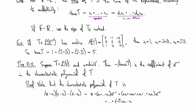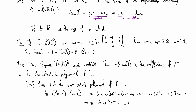So when everything is multiplied out, we have z^n minus trace(T)·z^(n-1) plus lower-order terms, with the constant term being (-1)^n times the product of all eigenvalues. We'll see shortly that the product of all the eigenvalues is the determinant.